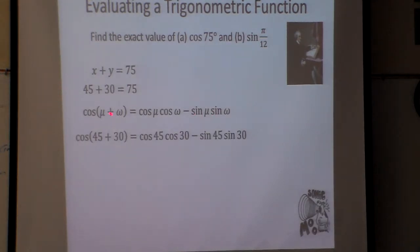Well, here's what I really know. Basically, u is 45 and w is 30. So I'm going to find the cosine of 45 times the cosine of 30 minus the sine of 45 times the sine of 30.